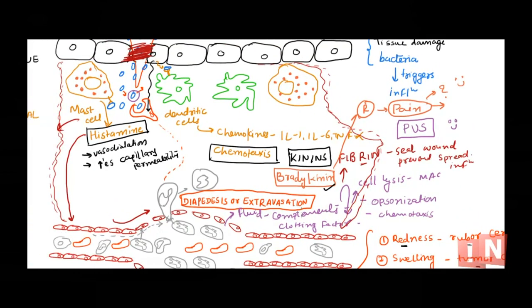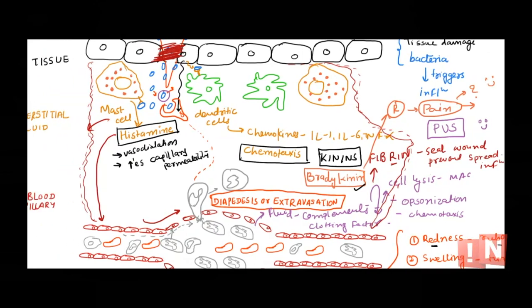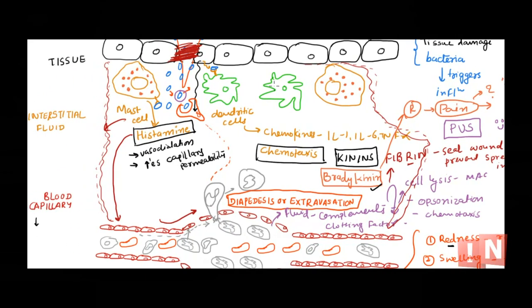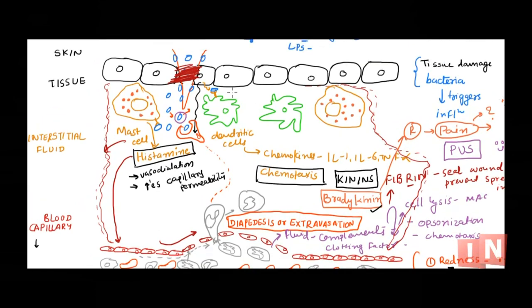What we saw is a local inflammation — restricted to the particular region where the injury was. If unfortunately the infection was very large, bacteria could spread through the bloodstream, or there was severe tissue injury involving multiple tissues in the body — then this whole process would occur at a large scale, and that would become systemic inflammation, which is much more dangerous.